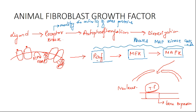RAF, MEK, and MAPK phosphorylate each other in a specific sequence, and it looks like runners passing a baton in a relay race — the phosphorylation is transferred from one protein to the other. The first kinase in the sequence is RAF, referred to as MAPK kinase kinase kinase. RAF phosphorylates MEK, which is MAPK kinase kinase, and MEK phosphorylates MAPK, the single kinase. MAPK is the anchor of the relay team.